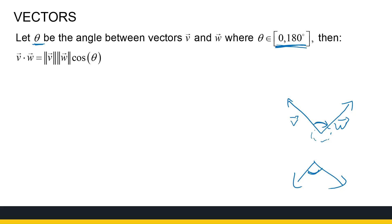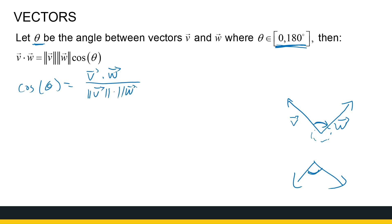The dot product is the same as the magnitude of V times the magnitude of W times cos theta. We're going to use this because it helps us get to the angle between two vectors. So cos theta equals V dot W divided by the magnitude of V times the magnitude of W, and that'll give me the angle between V and W.